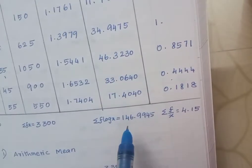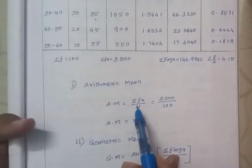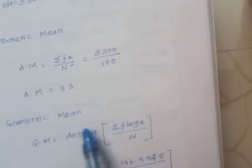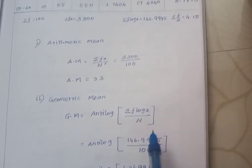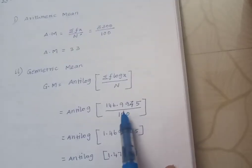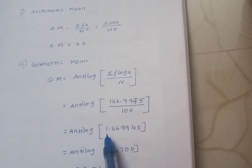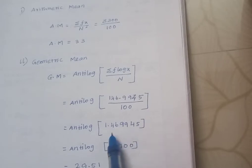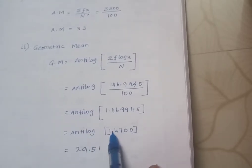Find summation f, summation fx, summation f log x, summation f divided by x. Summation f log x equals 146.9945. 146.9945 divided by 100 equals 1.469945.